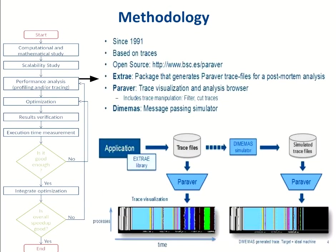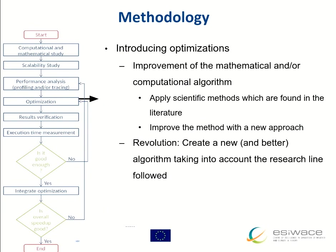Then we go to the performance analysis itself, which we will explain in more detail during this session using BSC tools. After the profiling analysis, when we need to introduce optimizations, we have two options: improve the mathematical or computational algorithm of the model — applying new scientific methods or improving the code — or create a new revolution and change the algorithm entirely and introduce a new one.